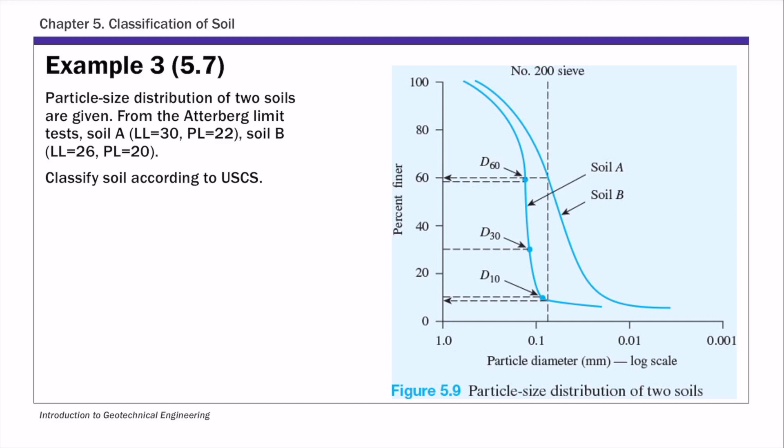So this is the second soil, soil B, of example 3, chapter 5 on soil classification. We're focusing now on this PSD curve for soil B. And we are given the liquid limit LL and plastic limit for soil B as well.